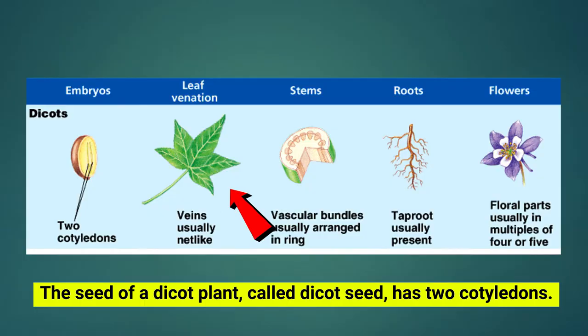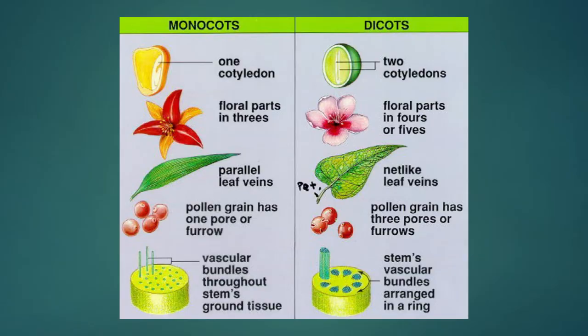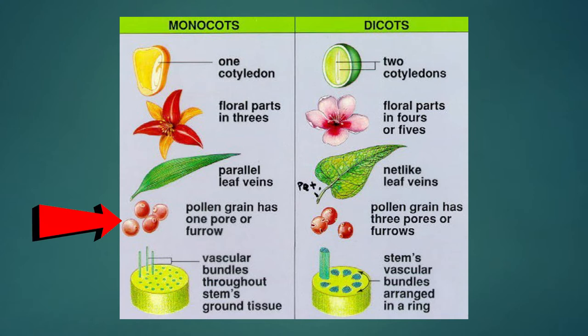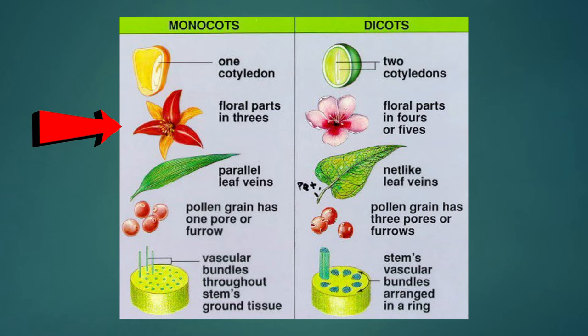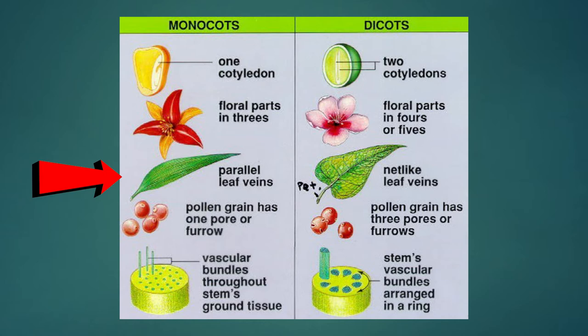Let's look at them side by side. Monocots have an embryo with a single cotyledon, while dicots have an embryo with two cotyledons. Monocots have pollen with a single furrow or pore, while dicots have pollen with three furrows or pores. Monocots have flower parts in multiples of three, while dicots have flower parts in multiples of four or five. Monocots have major leaf veins that are parallel — they run straight and have a neat split when torn.